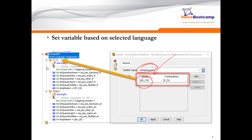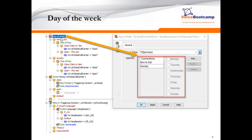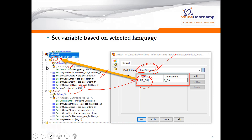If the language variable is French, we set some variables, set the language extensions, and hard-code the 'language_session' variable to the French value. If it is English, we do the exact same thing but set it to English.